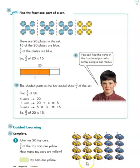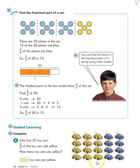It says John has 20 toy cars. Three-fifths of the toy cars are yellow. So how many toy cars are yellow? What we're really doing here is figuring out what is three-fifths of the number 20, because we know there are 20 cars to start with. We can see from the picture that the 20 toy cars have been split into five equal groups — this is one group, two groups, three groups, four groups, five groups. So this time we're saying 20 divided by five instead of 20 divided by four.